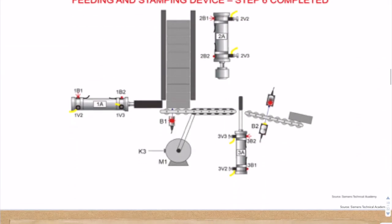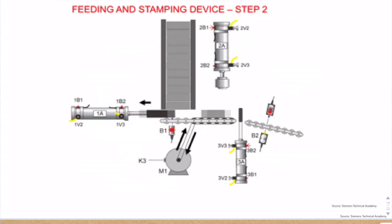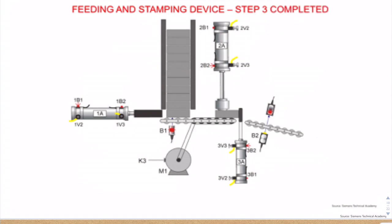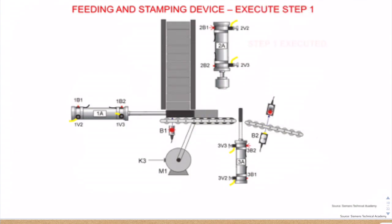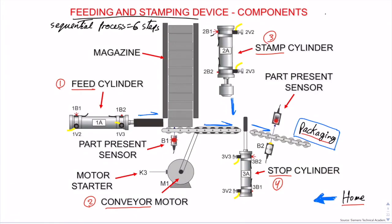After seeing the machine sequence, understanding the sequential process is now much easier. If we want to give a name that describes each step, then the sequential process is: feeding, conveying, stamping, releasing, packaging, and finally home position.